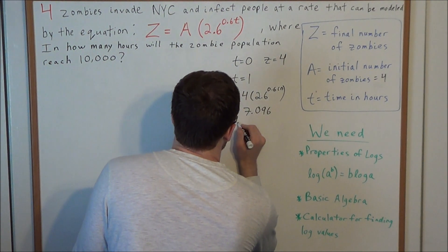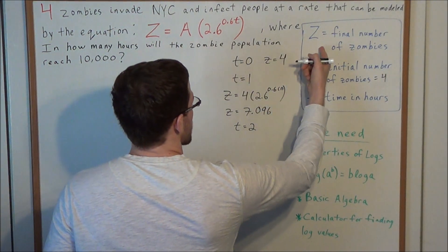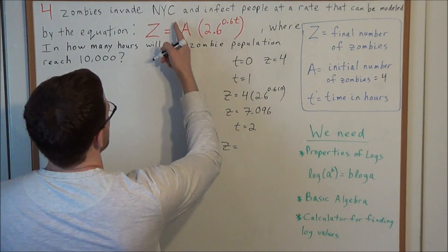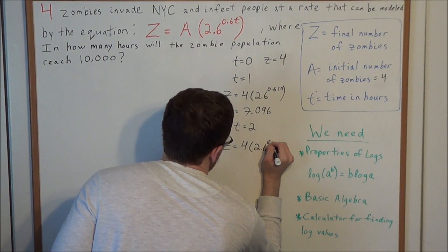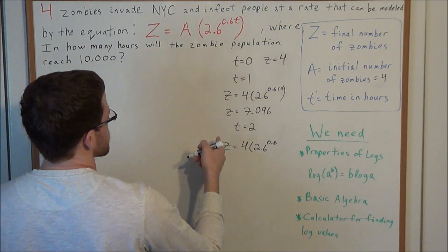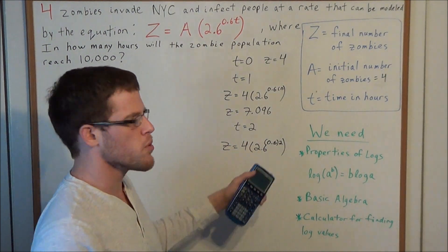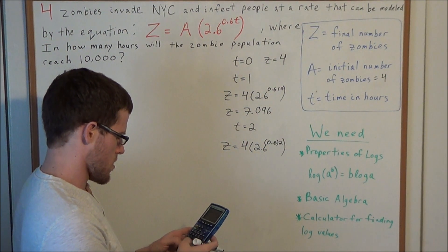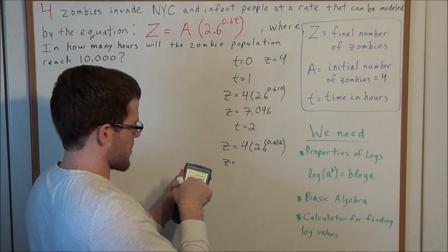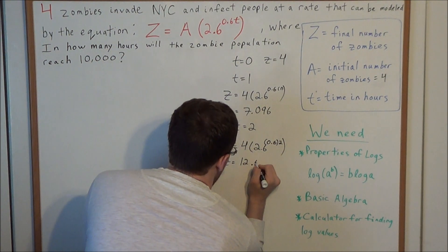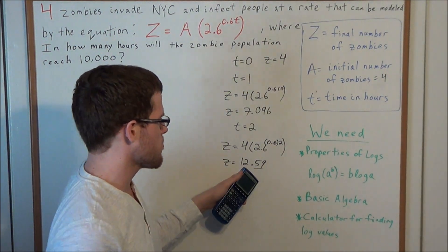Now let's look at time equals 2. I want to investigate how many zombies there are after 2 hours. We have z equals 4 times 2.6 to the 0.6 times 2. Since 0.6 times 2 is 1.2, we're looking at 2.6 to the 1.2 times 4. Rounding to the hundredths place, we get 12.59 zombies at 2 hours.